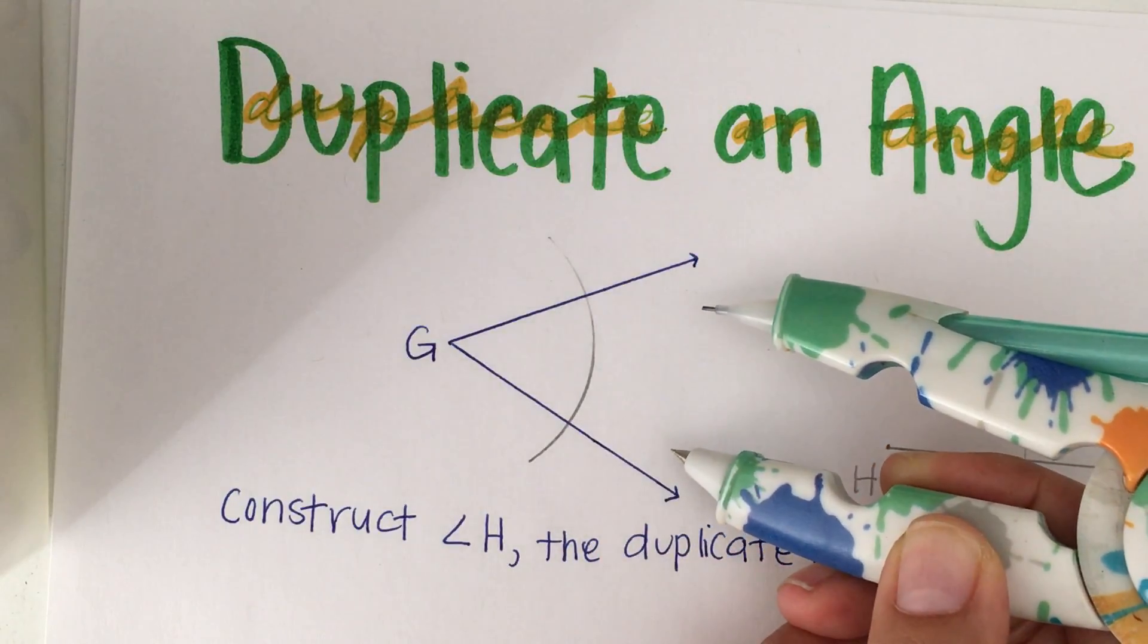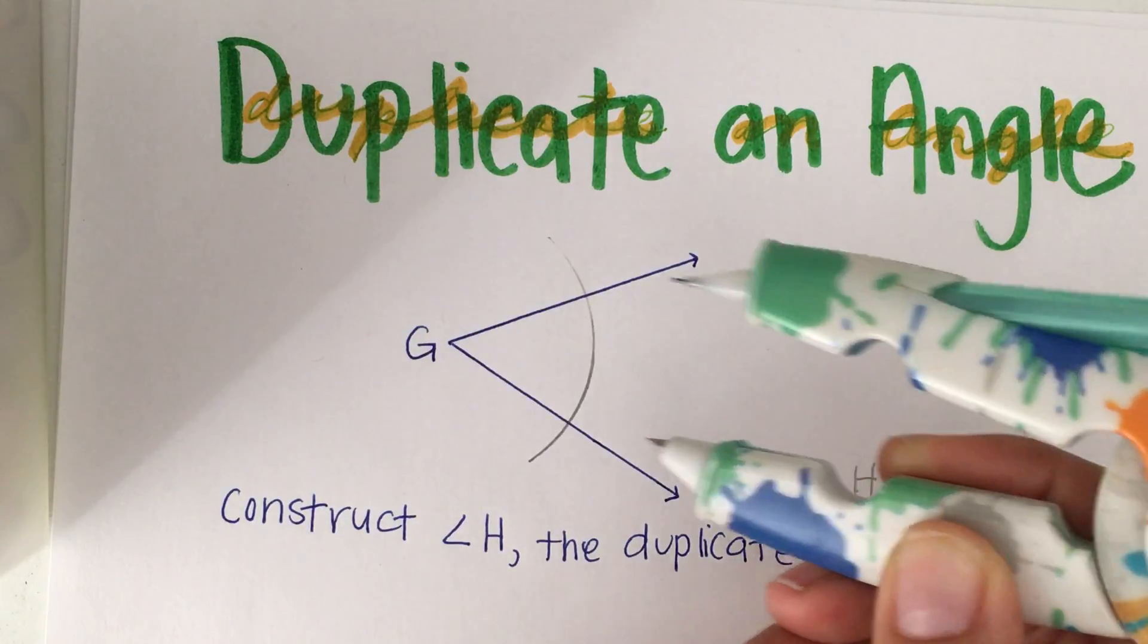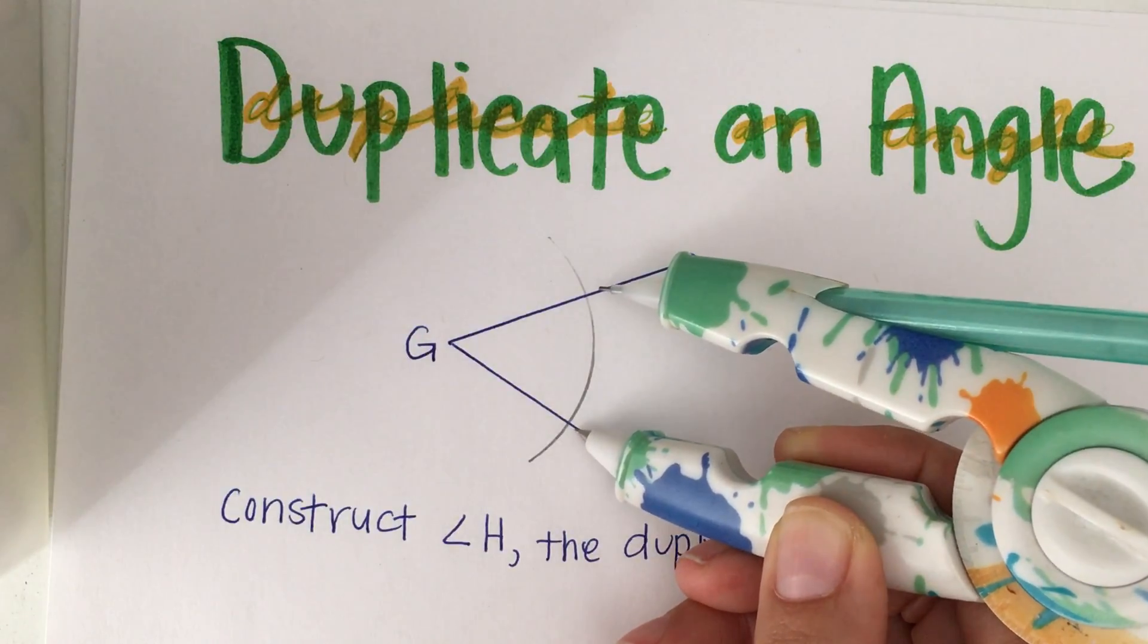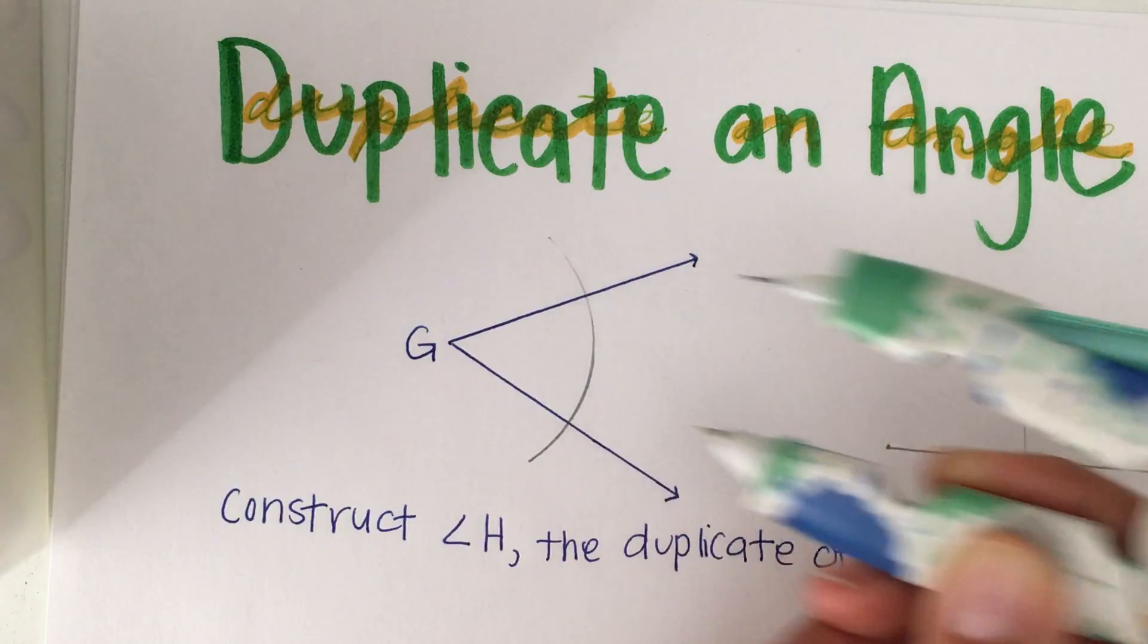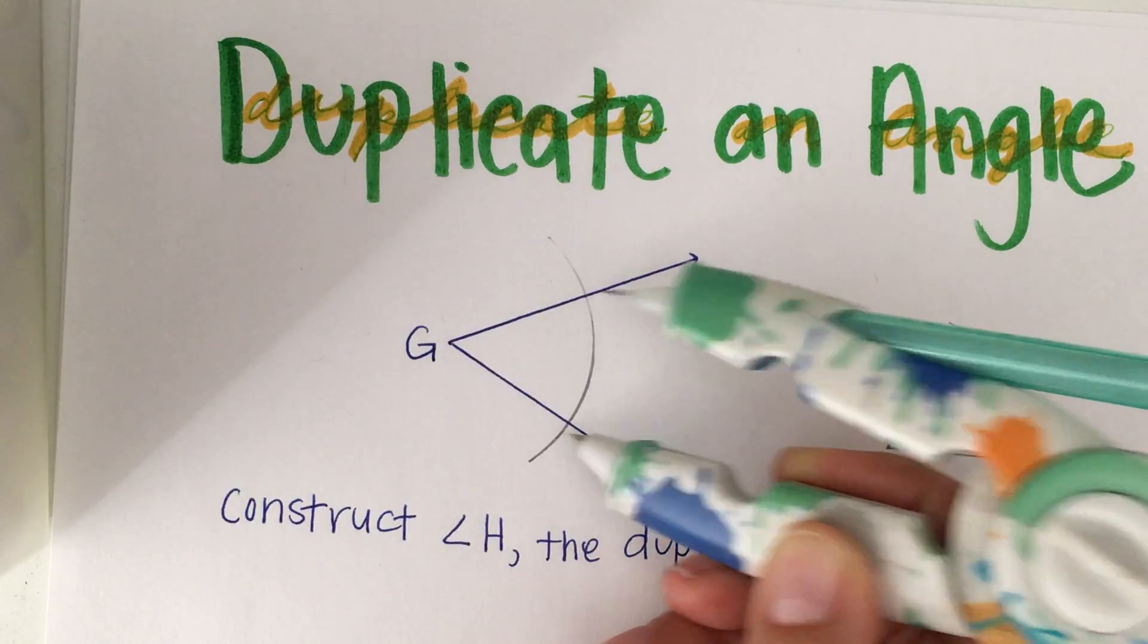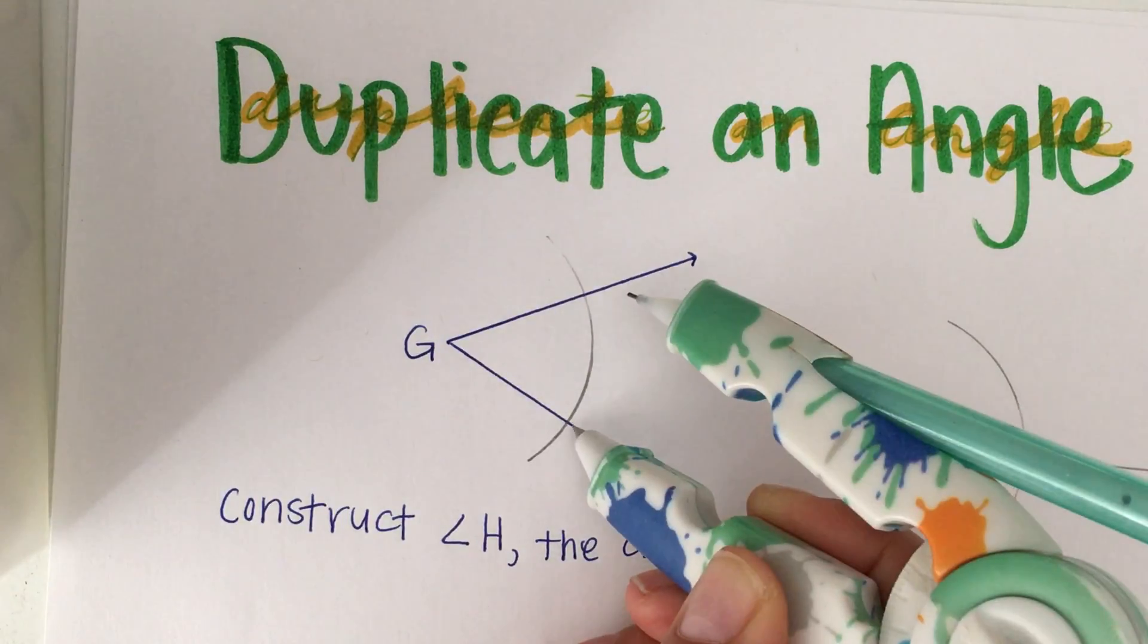By marking where in the angle I'm measuring, I can make sure that it's accurate between the original and its duplicate. So the next thing I'm going to do is measure across angle G at the arc that I originally made.